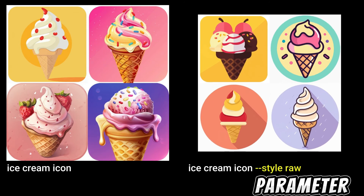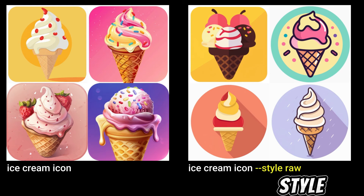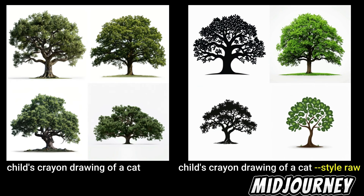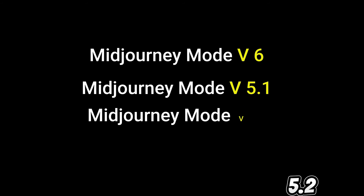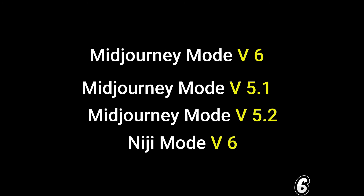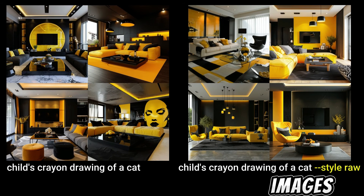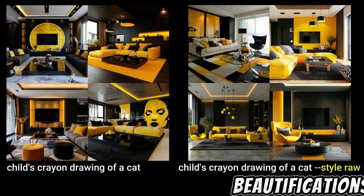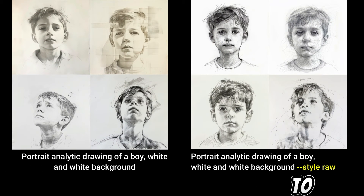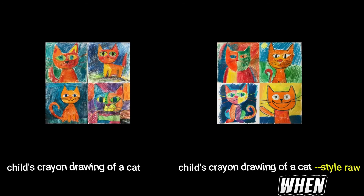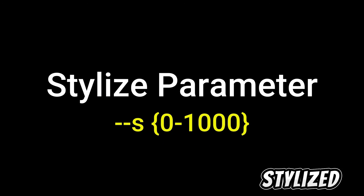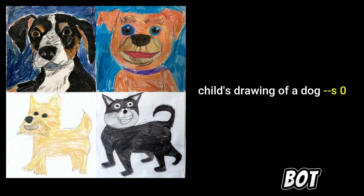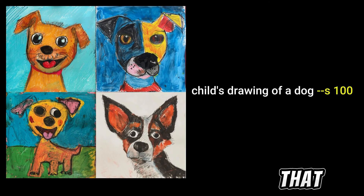The style parameter is used to replace the default style or aesthetic of some Midjourney versions. The `--style raw` parameter is accepted by Midjourney version 6, 5.1, and 5.2. Using style raw produces images with less automatic beautification applied, which can lead to more accurate matching when prompting with a specific style.